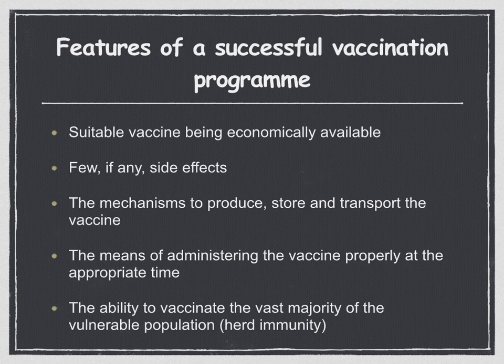In the last topic, we discussed vaccination and the features of a successful vaccination program. These include a suitable vaccine being economically available in sufficient quantity to immunize all of the vulnerable population. Few, if any, side effects from vaccination, as unpleasant side effects may discourage individuals from being vaccinated. The mechanisms to produce, store and transport the vaccine. The means of administering the vaccine properly at the appropriate time, involving trained staff throughout the population. And the ability to vaccinate the vast majority of the vulnerable population at one time, so that transmission of the pathogen is interrupted — this is known as herd immunity.